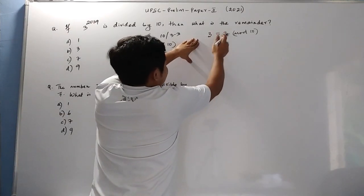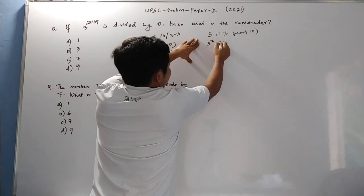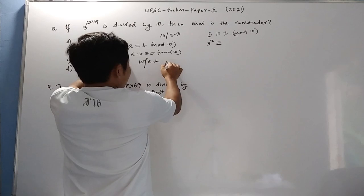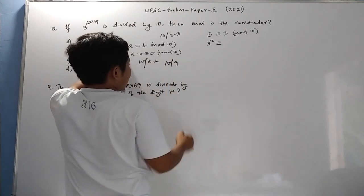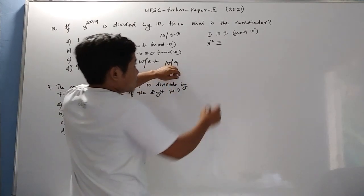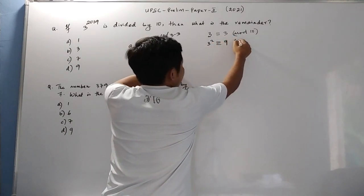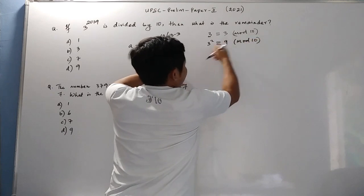So we are raising the power. 3 squared is 9. Since 10 cannot divide 9, 9 is less than 10 still. So 3 squared is 9, still congruent to the same number.